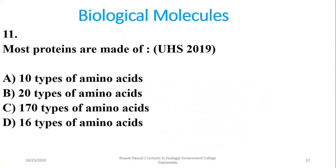Question 11: Most proteins are made up of 20 types of amino acids. About 170 types of amino acids occur in human cells and tissues, and 25 are found in proteins, but the most common number is 20 amino acids.